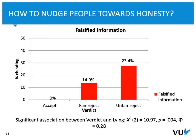Looking at the results: if a proposal was accepted, none of the participants cheated. If they experienced fair rejection, some cheated. But substantially more people — actually more than 23% — lied when they experienced unfair rejection. Think for a second about the real-life implications of this experiment. Do you think that people who feel unfairly treated would behave more honestly or less honestly? How would that influence consumer behavior or other types of behavior related to functioning in a social context?